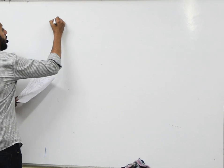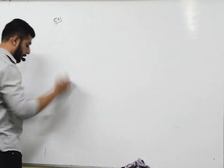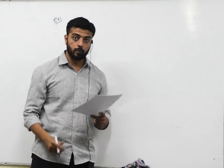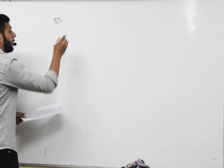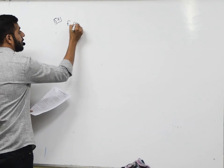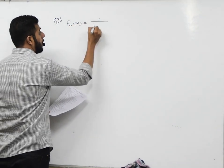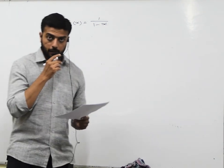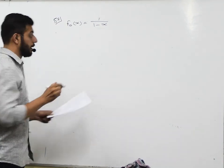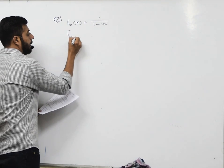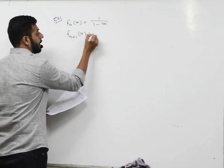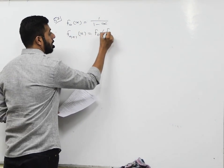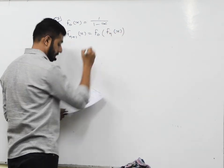MCQ number 57. In the 57th question, you are given x belongs to R, x does not equal to 0, x does not equal to 1. The definition of a function is given as f₀(x) = 1/(1−x), where x ≠ 1. Also given is f_{n+1}(x) = f₀(f_n(x)).